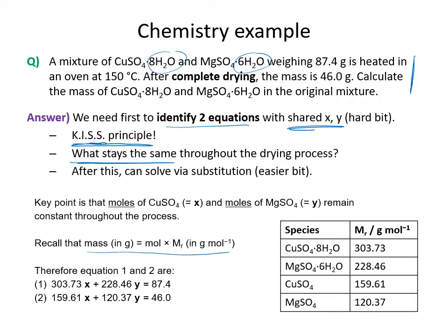The key equation is: mass = moles × Mr. Using the molar masses tabulated here, equation 1 is: Mr(CuSO₄·8H₂O)×x + Mr(MgSO₄·6H₂O)×y = total mass before heating. Equation 2 uses the molar masses of the dehydrated forms: Mr(CuSO₄)×x + Mr(MgSO₄)×y = total mass after heating.